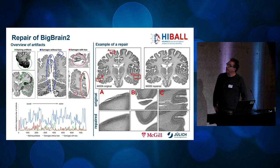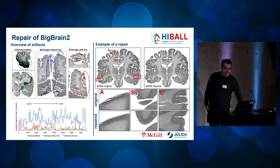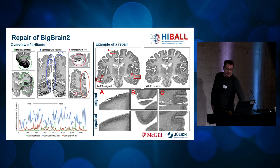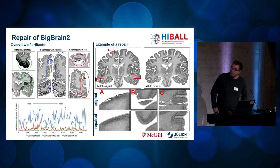Although most histological processing steps were carried out with a lot of know-how in our labs, the digitized histological sections show a large number of artifacts, and most of these artifacts must be repaired to achieve a good 3D reconstruction. In order to record the artifacts both quantitatively and qualitatively, we have divided them into two or three groups: staining artifacts, damages without loss, and damages with loss. The diagram shown here shows the distribution and strength of individual artifacts as a result of manual classification, revealing that about 30 percent of all sections must be repaired. An example of a repair is shown on the right side.